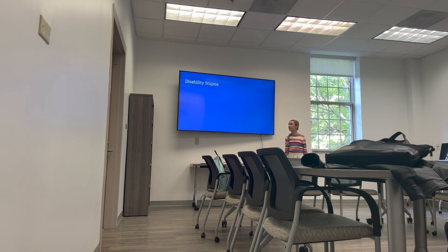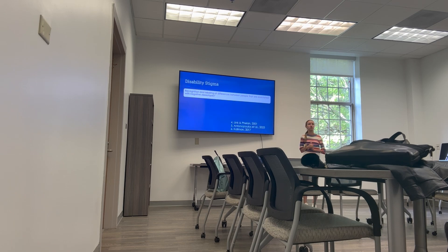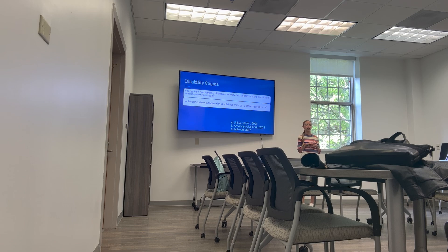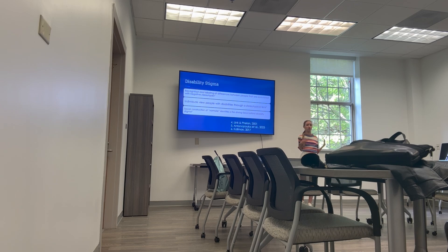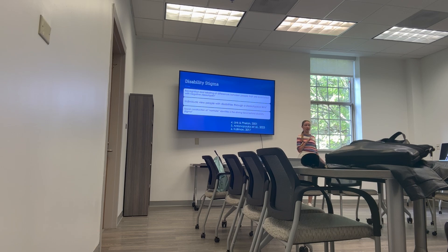Moving on to disability and stigma. The definition of stigma is the recognition and labeling of differences between people that are associated with negative stereotypes. Individuals view people with disabilities through a stereotypical lens, which often comes from the social construction of normate identities. Normate identities often include majority groups — for example, white people, men, and non-disabled individuals — and minority groups are not viewed within that normate identity, leading to stigmatization.